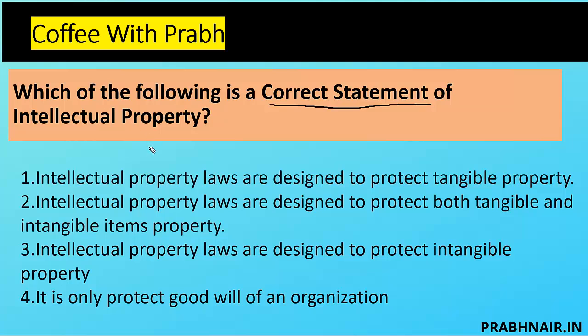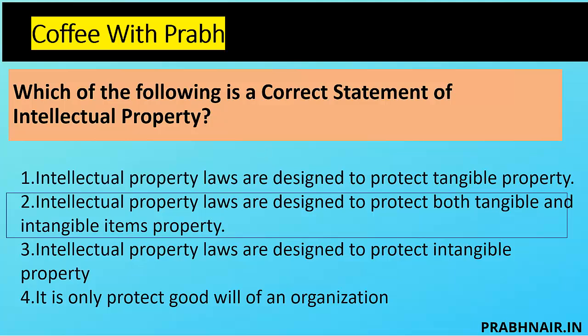First coffee short: which of the following is a correct statement of intellectual property? Intellectual property is used to protect the thought process or ideas built by humans or companies. Option A says IP laws are designed to protect tangible property. Option B says both tangible and intangible. Option C says only intangible, and Option D says it only protects goodwill. The answer is B, because IP protects both tangible and intangible — A only covers tangible, C only covers intangible, and D covers only one part called goodwill.